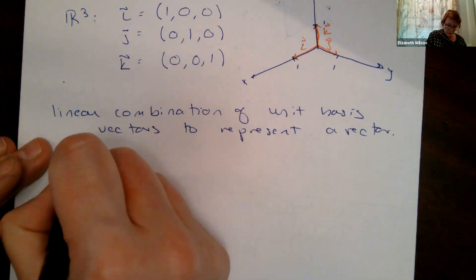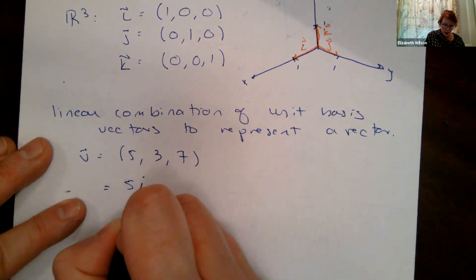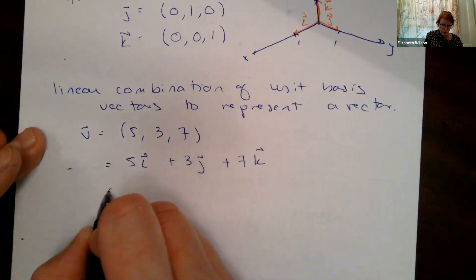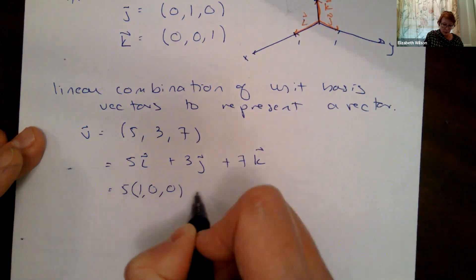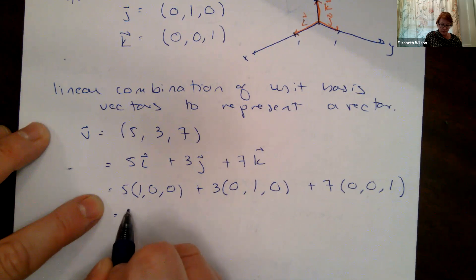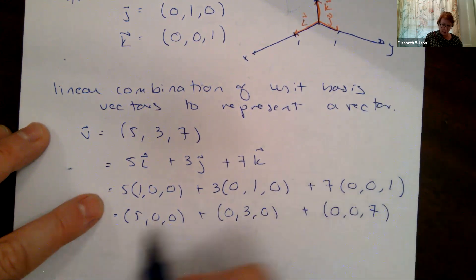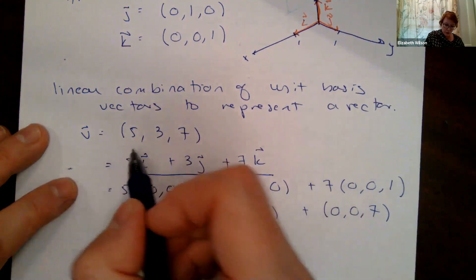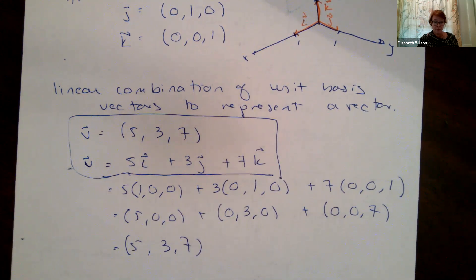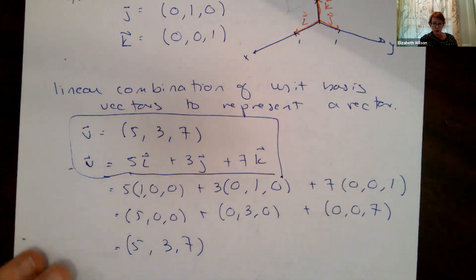I can represent any vector as a linear combination of unit basis vectors. The vector V equals 5, 3, 7 can also be written as 5 times I plus 3 times J plus 7 times K. This expands to 5 times 1,0,0 plus 3 times 0,1,0 plus 7 times 0,0,1, which gives 5, 0, 0 plus 0, 3, 0 plus 0, 0, 7 — adding up to 5, 3, 7. Both are equally valid ways to represent a vector.